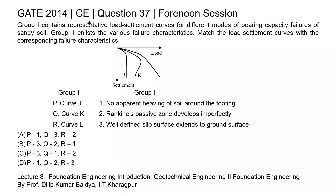This is question 37 of Civil Engineering Paper GAY 2014, forenoon session. Group 1 contains representative load-settlement curves for different modes of bearing capacity failures of sandy soil. Group 2 lists the various failure characteristics. Match the load-settlement curves with the corresponding failure characteristics. Group 1: P curve J, Q curve K, R curve L. Group 2: 1 - no apparent heaving of soil around the footing; 2 - Rankine's passive zone develops imperfectly; 3 - well-defined slip surface extends to ground surface.